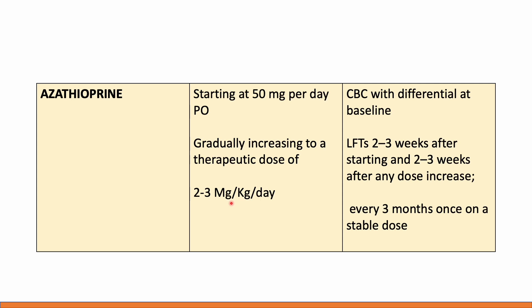For a patient who is 100 kg, the dose could be around 200 mg, so 100 mg twice a day. It is important to start slow and then gradually increase. For follow-up tests, we do a CBC with differential at baseline. Since the most common side effect is derangement in liver functions, LFTs should be done 2 to 3 weeks after starting the drug, and then repeated 2 to 3 weeks after any dose increase.